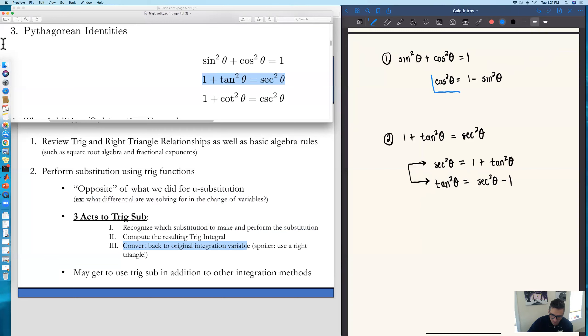Now you might be wondering, why did I go through the bother of solving for some of these trig functions? Well, the form of these identities will kind of tell us which trig substitution we actually make.